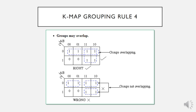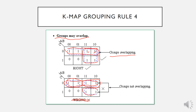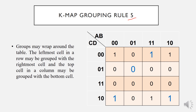Groups may overlap. We can use the same ones in more than one group. Even if a cell is already included in one group, we can still use it in another group as long as we are trying to find the largest group for the remaining ones. For example, we can have groups of four and four overlapping. When we do not apply the largest grouping, we end up with extra terms in the expression — three terms instead of two.